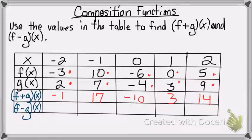And then for the last row, it's asking f minus g of x. So that simply means I'm going to subtract negative 3 minus 2, which equals negative 5.